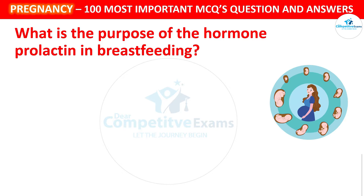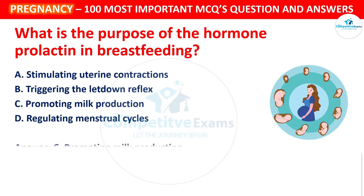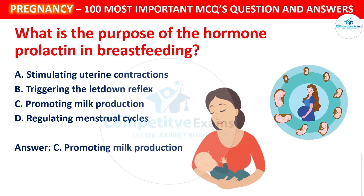Next question: What is the purpose of the hormone prolactin in breastfeeding? Your options: Stimulating uterine contractions, Triggering the let-down reflex, Promoting milk production, or Regulating menstrual cycles. The correct answer is Promoting milk production. Prolactin is the hormone responsible for stimulating and maintaining milk production during breastfeeding.